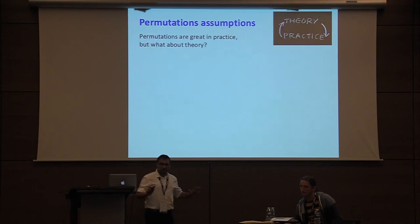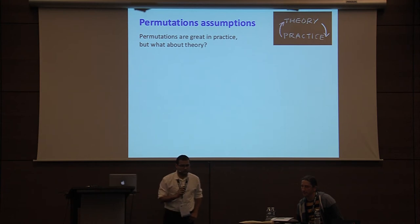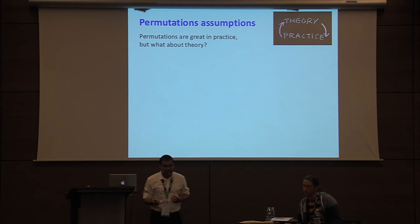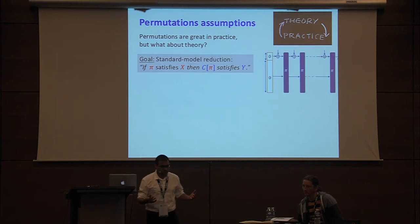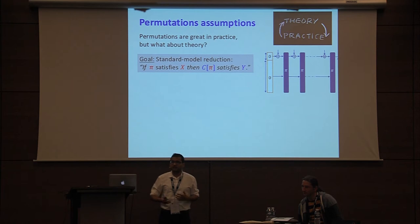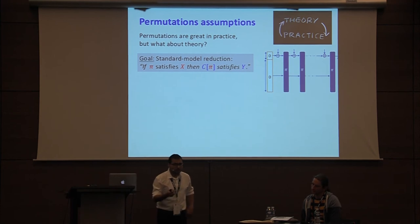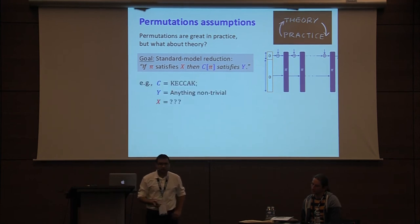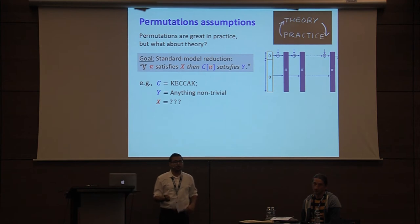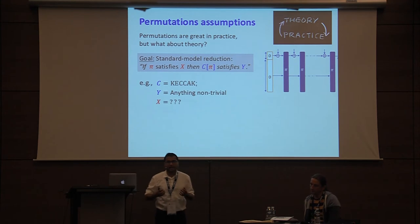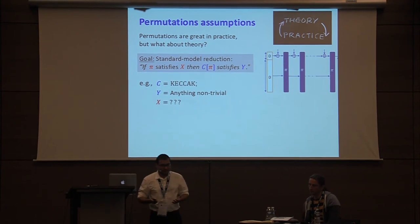So permutations are great in practice, but what about the theoretical foundations? In theory, for a permutation-based construction C, we ideally want to prove a theorem like this: if pi satisfies some security notion X, then C of pi satisfies some security notion Y. So the question is, what is the notion X that suffices to prove something non-trivial like collision resistance for permutation-based constructions like Keccak?